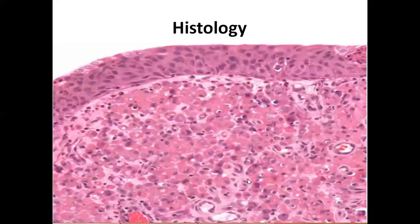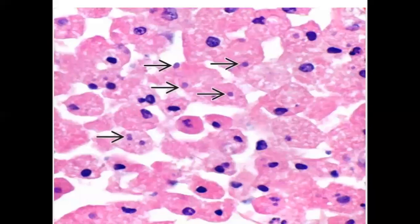When we look at the histology, we can see a diffuse sheet of foamy histiocytes which contain black crystals of calcium, commonly representing calcified bacteria due to the degradative defect in the phagocytes. On high power, the arrow shows these calcified bacterial material inside the large histiocytes.